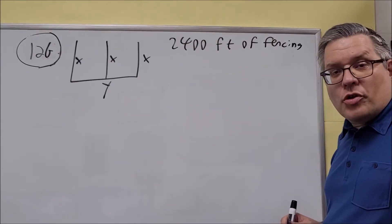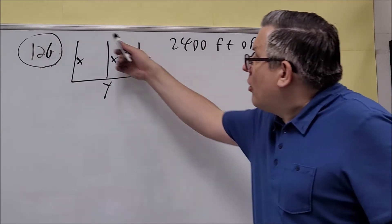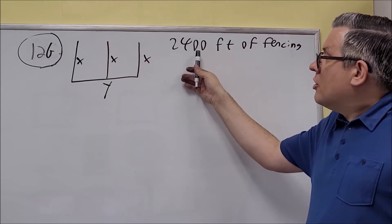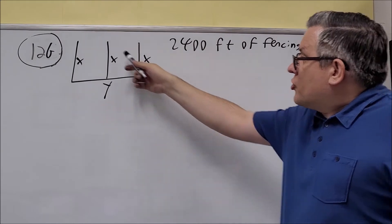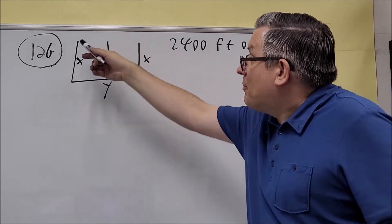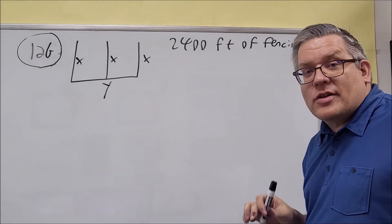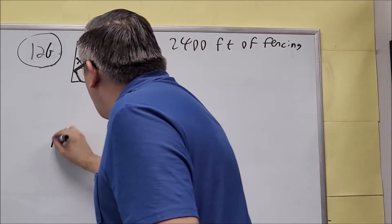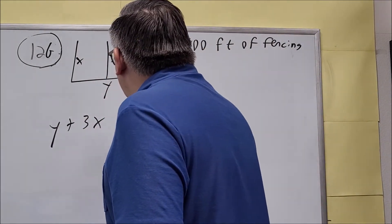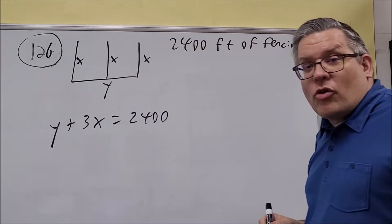Based on that, one of our formulas is: if we take all these sections and add them together, it should equal 2,400. There's no y across the top, so it's not going to be 2y here, it's going to be just y only. There's only one y in the picture. So y plus 3x equals 2,400.